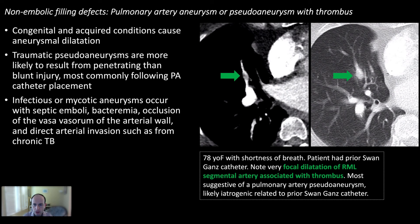An interesting case: focal dilation of a pulmonary artery segment with a small filling defect. This patient recently had a Swan-Ganz catheter, and this is actually a small pulmonary artery pseudoaneurysm with a tiny bit of mural thrombus — not a pulmonary embolism.